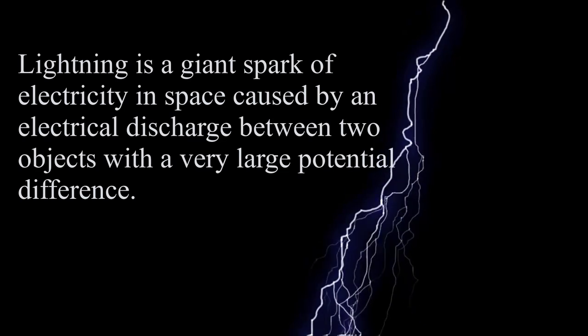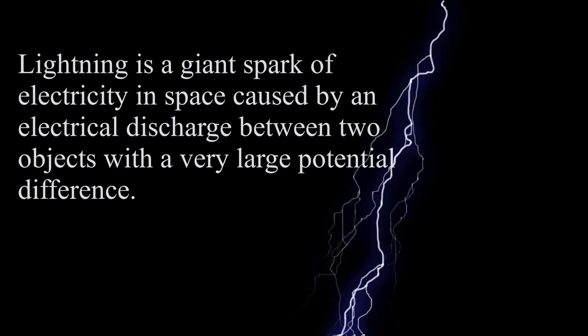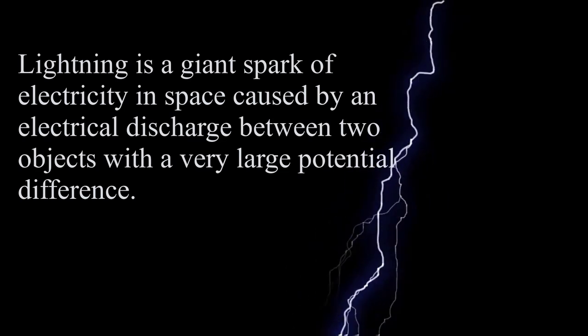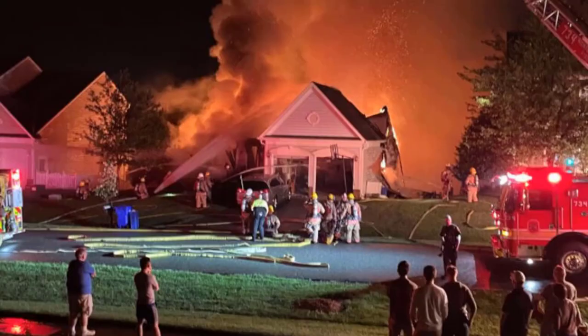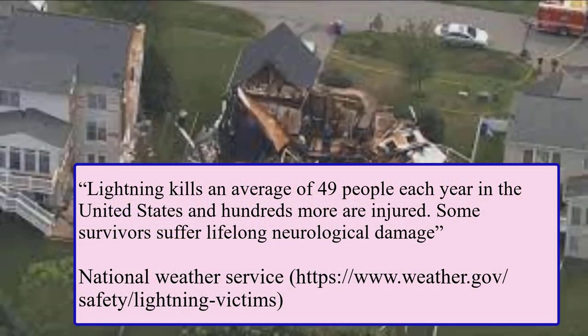Lightning is a giant spark of electricity in space caused by an electrical discharge between two objects with a very large potential difference. According to the National Weather Service, lightning kills an average of 49 people each year in the United States alone and hundreds more are injured.